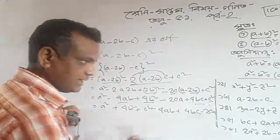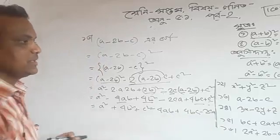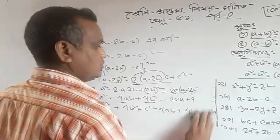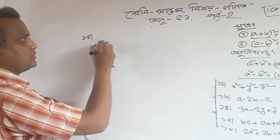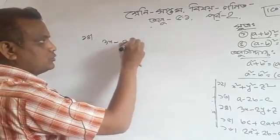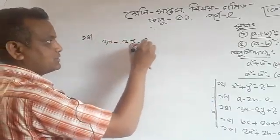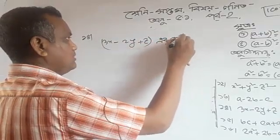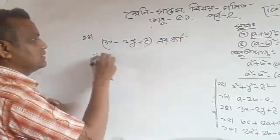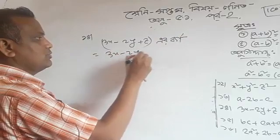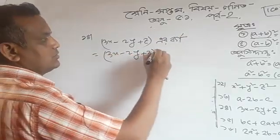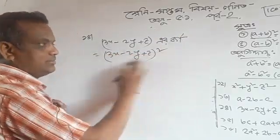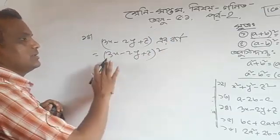So now we are going to start with problem 14. Number 14 is 3x minus 2y plus z. This is done the same way — 3x minus 2y plus z.